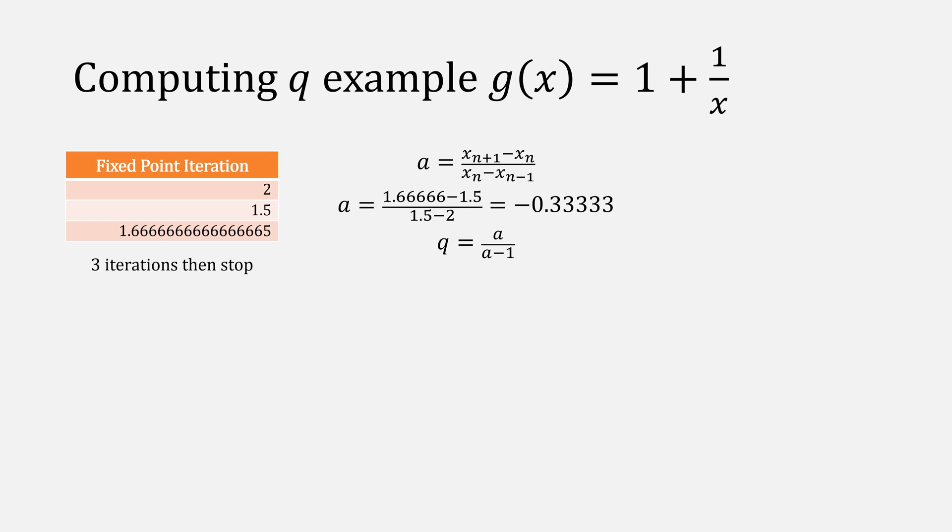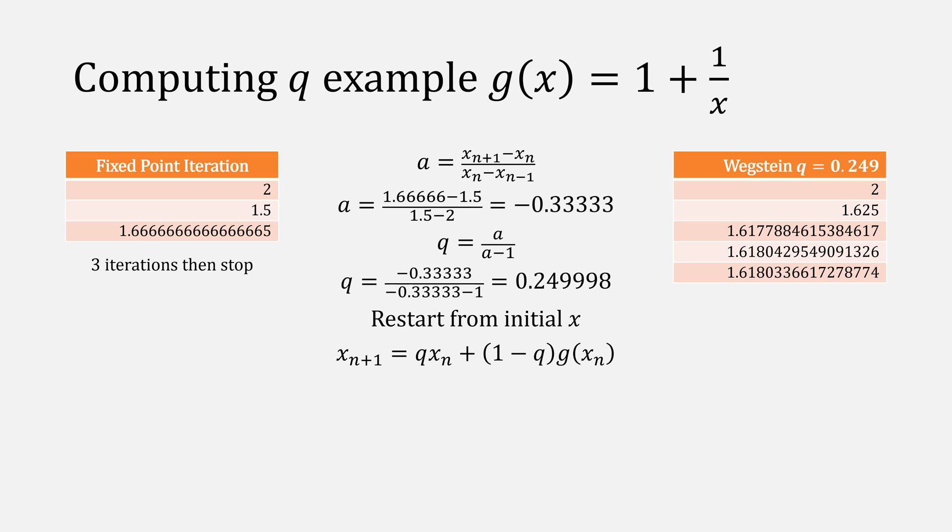Afterwards, we'll plug this into our equation for q, giving us 0.249. Then we'll restart from our initial x using Wegstein's method. This now converges in only five iterations.